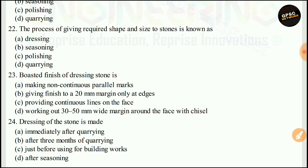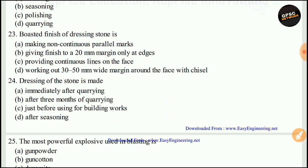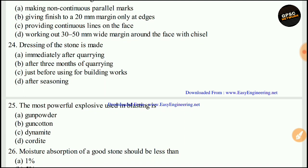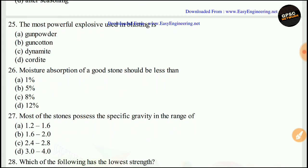The process of giving required shape and size to stone is known as dressing. The right answer is A. The worst finish of dressed stone involves making non-continuous parallel marks. Dressing of stone is done immediately after quarrying. The right answer is A. The most powerful explosive used in blasting is gun cotton. The right answer is B.